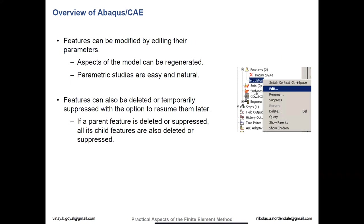Features can be modified by editing their parameters. Within a part, you can right-click on a feature and select 'edit' if you want to change that particular parameter. This allows you to do parametric studies in a very easy and natural manner. Your features can also be deleted or temporarily suppressed. One of the most useful features within Abaqus — if you want to temporarily remove certain features, you can right-click and say suppress. That way it's not active in the model; however, Abaqus remembers what it was. If you decide later you made a mistake, you can resume that feature and it'll come back.